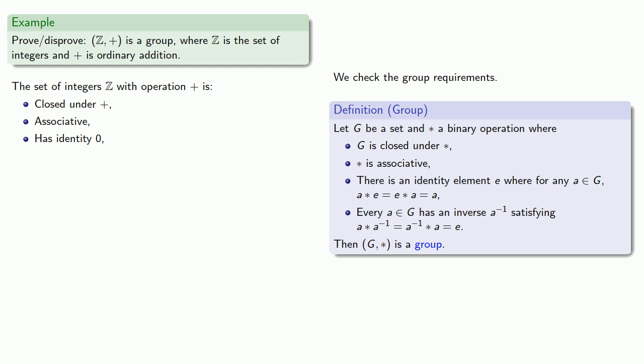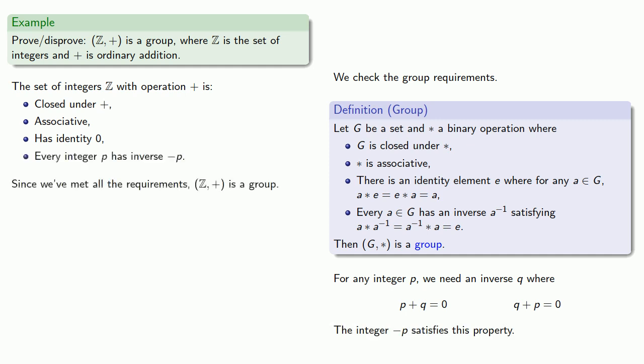We also need an inverse. And so for any integer P, we need an inverse Q where P plus Q is equal to zero. It's a right inverse, and it also has to serve as a left inverse Q plus P has to give us zero. And the integer minus P satisfies this property. And since we've met all the requirements, Z with operation plus is a group.